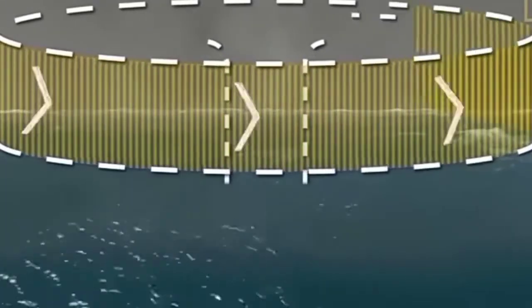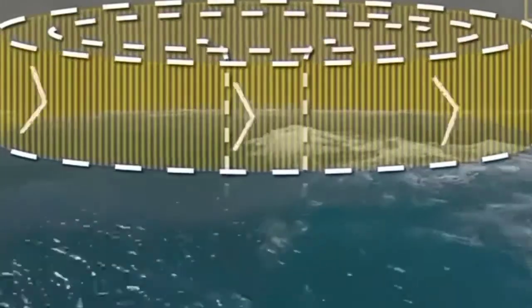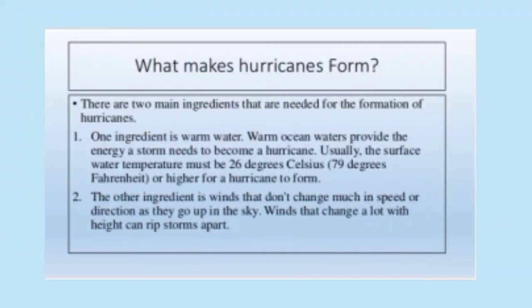The second ingredient is winds that don't change much in speed or direction as they go up in the sky. Winds that change a lot with height can rip storms apart.